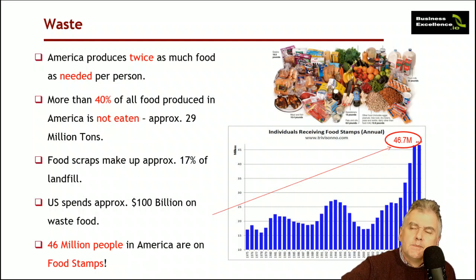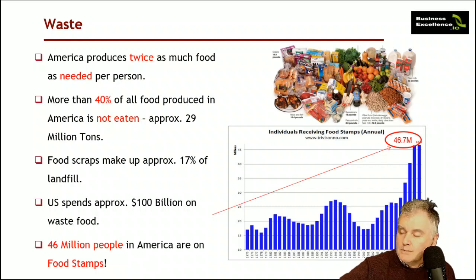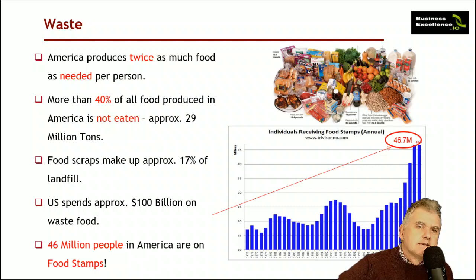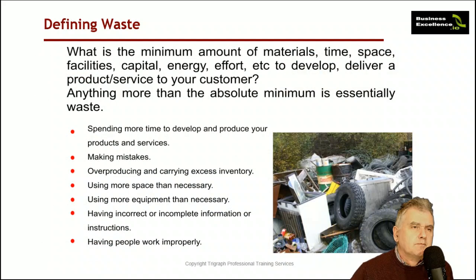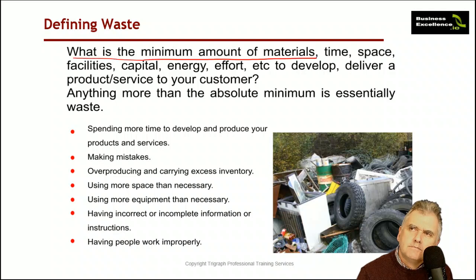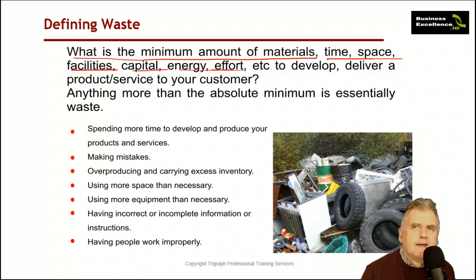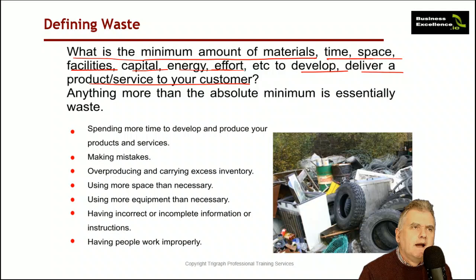Why is so much food produced that people don't eat? Partly people are fussy, partly too much of the wrong type of food is produced, partly regulation — regulations about size, shape, blemishes, sell-by dates. All of these generate an awful lot of waste. So the question is: what is the minimum amount of materials, time, space, facilities, capital, and energy needed to develop and deliver a product or service to your customer? Anything more than the absolute minimum is waste.